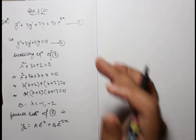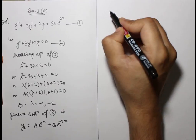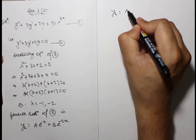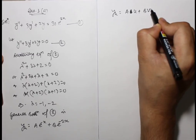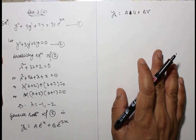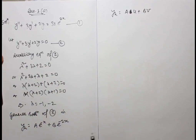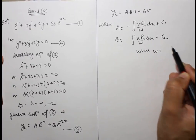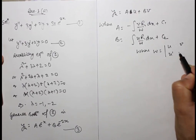Now we solve using variation of parameters. We need the method where A and B become functions of x — that is, y = A(x)·u + B(x)·v. This is equation three, where W is the Wronskian of u and v.